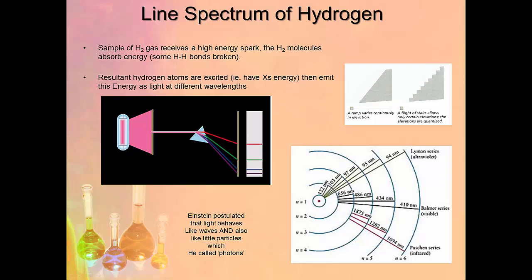The line spectrum of hydrogen is produced when hydrogen gas receives a high energy spark, the hydrogen molecules absorb some of this energy, and the electrons in the atoms are excited to a higher energy state. When they return to their ground state, some energy is emitted as light. When you pass this light through a prism, you see distinct bands of light being produced, which correspond to the different energy levels that the electron is being excited to.